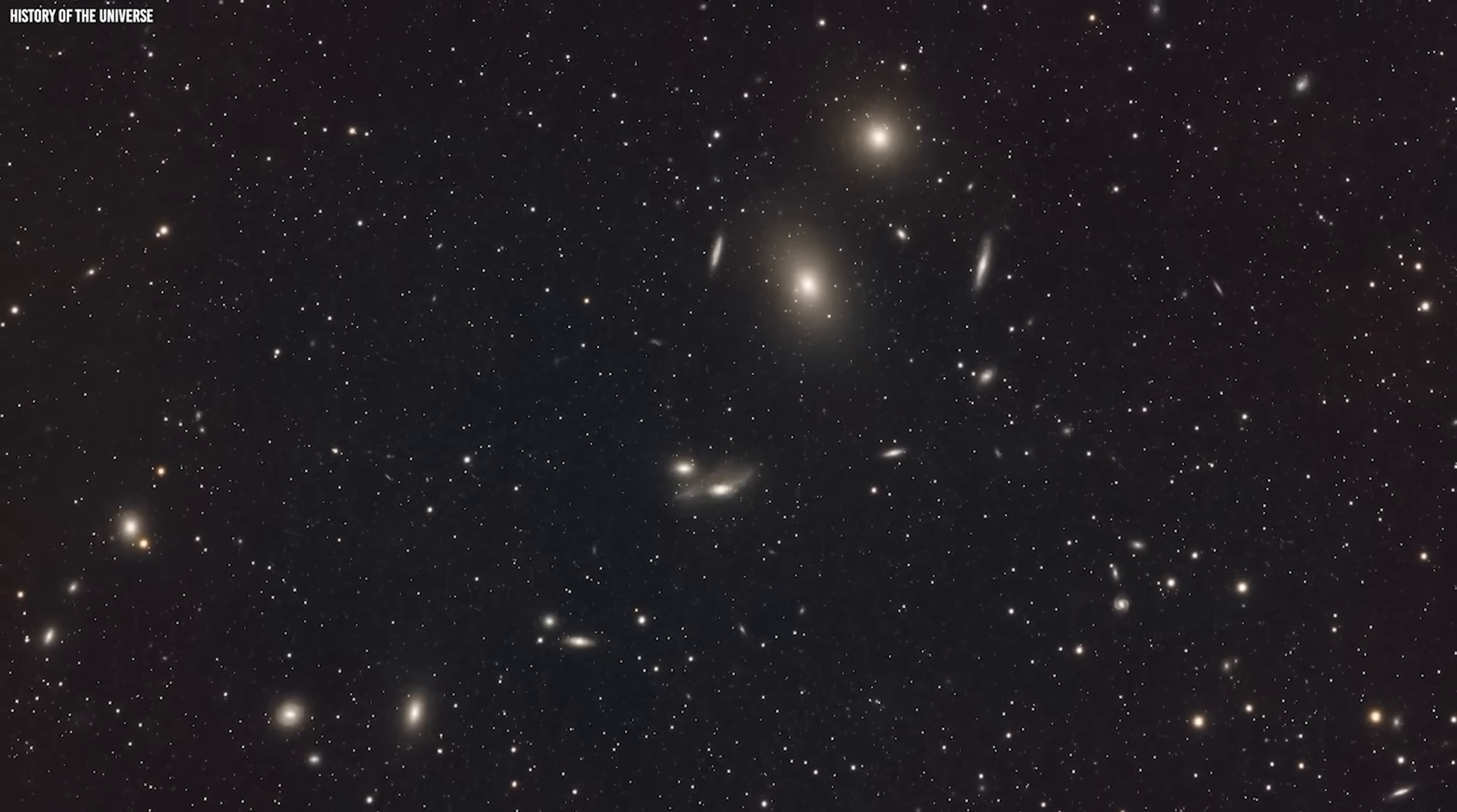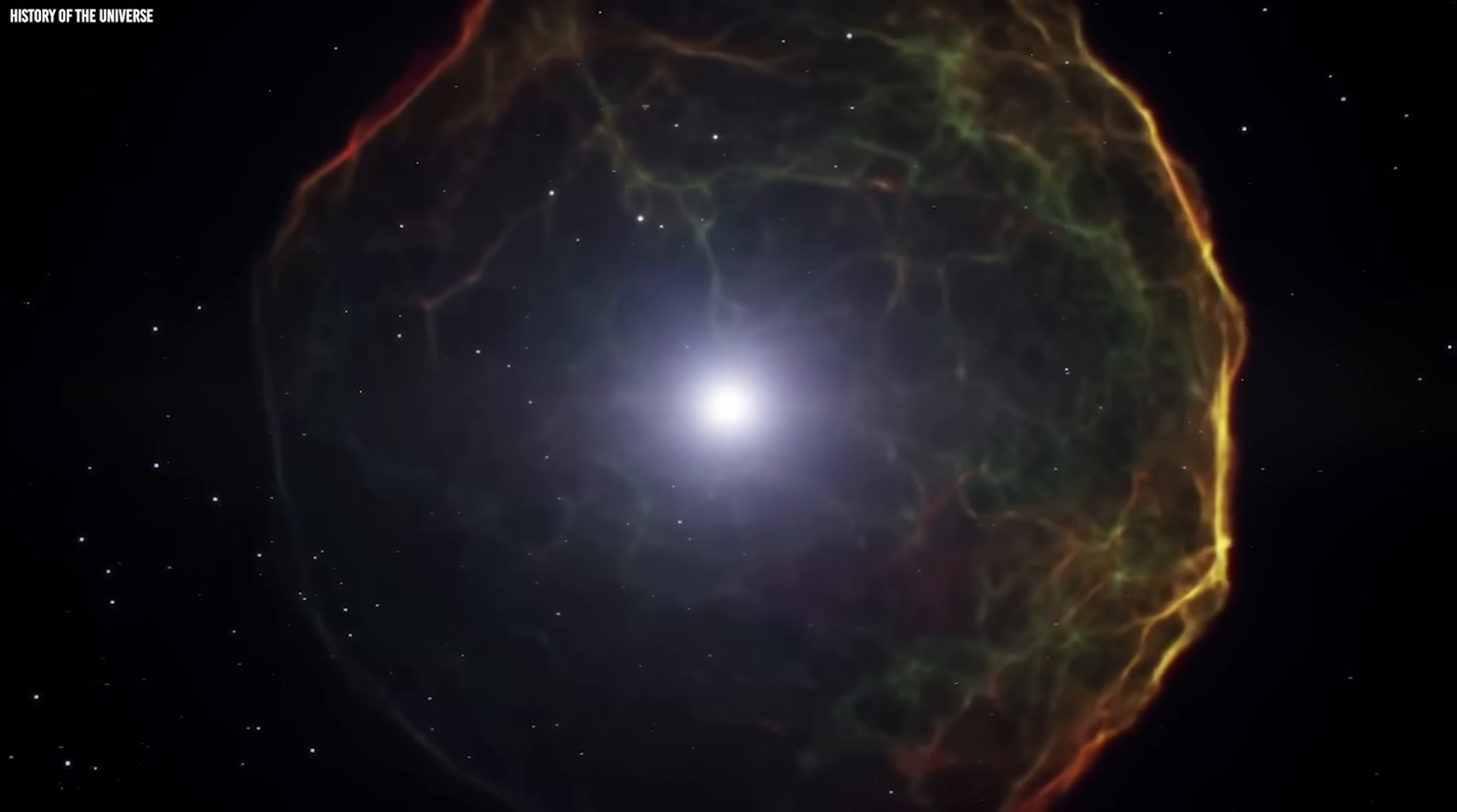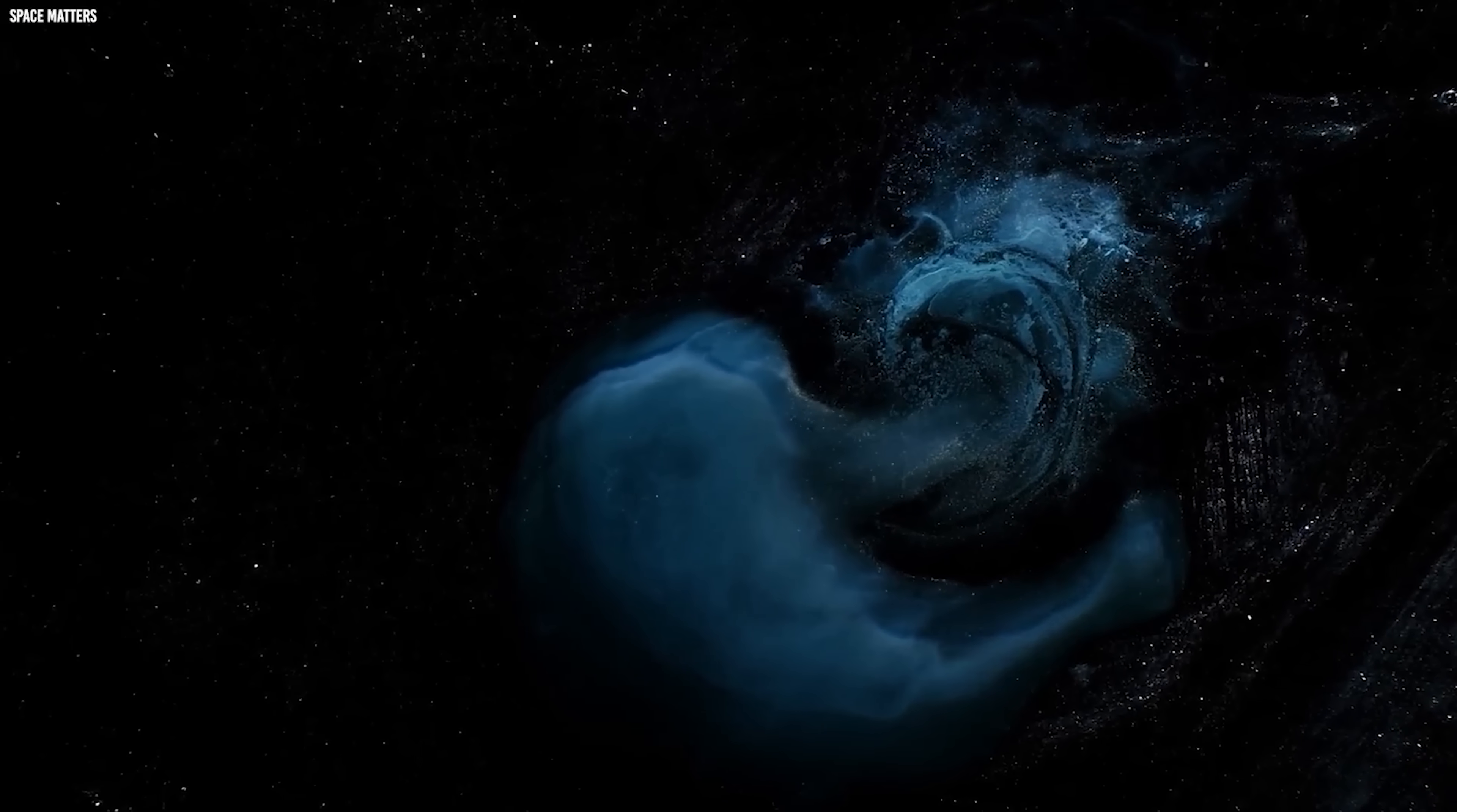These are not fragile proto-galaxies. They are already complex, glowing systems. And more astonishing still, they contain heavy elements like carbon and nitrogen. That means at least one full generation of stars had already been born, lived, and died in just a few hundred million years, a pace of evolution that borders on the impossible and shakes the very foundations of cosmology.